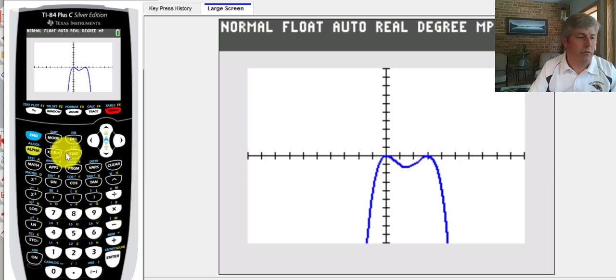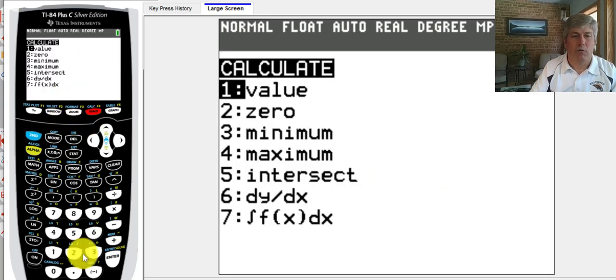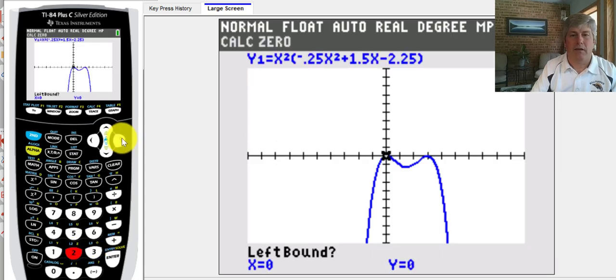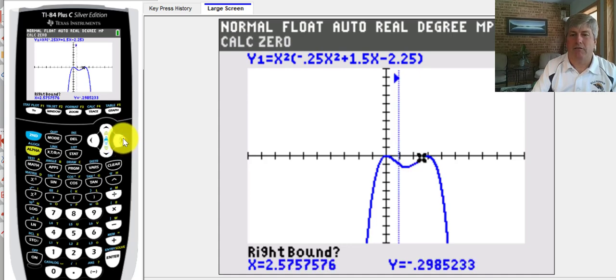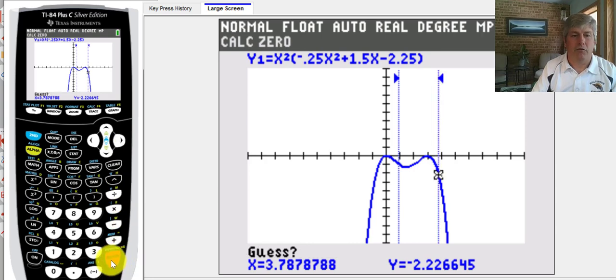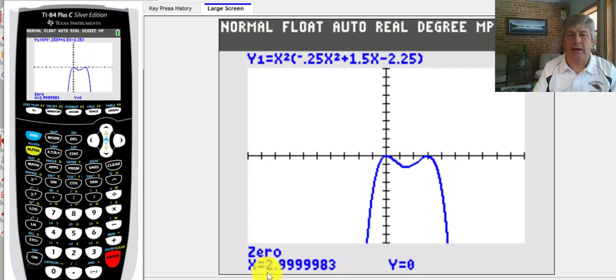So let's go find those zeros. And we can find the zeros by going to the calc function. So second and then the trace key or second calc. We'll find the zeros. It's telling us where to search. We're not going to search for the one at zero. So our left bound and let's trace over to the other side of that zero. And our right bound and it'll search in between there. Our zero occurs at essentially three.